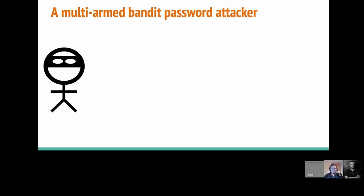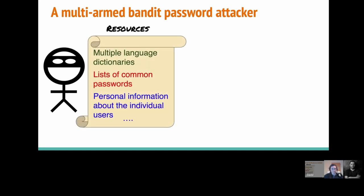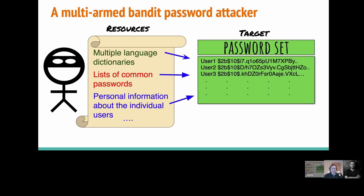So how does this relate to password cracking? Well, a password attacker — either doing cracking or online guessing — is using guesses, like currency they're spending to get good results. They also have different dictionaries they can draw on: dictionaries in different languages, maybe password datasets we all look at to see how people are choosing their passwords. They may even have more personalized information — names, addresses, blog posts — and they're using all of these to inform their guesses. What are they trying to do? They have a set of hashes and they're trying to crack these hashes to find passwords within their dictionaries that match.